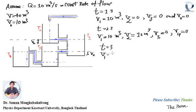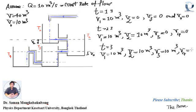At t equals 3 seconds, V1 is still equal to 10 mq, V2 equals 10 mq, and V3 now equals 10 mq. V4 equals zero. Now the water in tank 3 equals V0, water in tank 2 equals V0, and water in tank 1 equals V0.